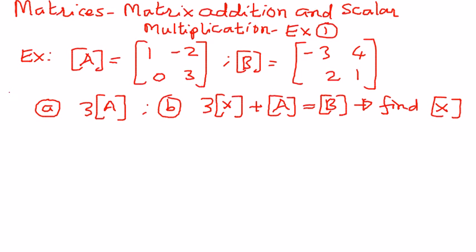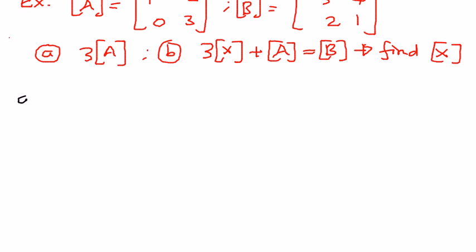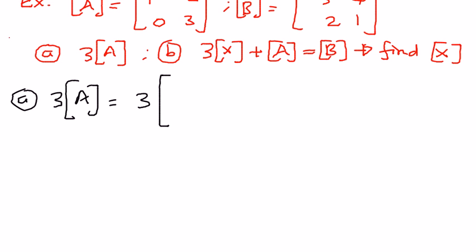So let's try this. The first example: we have 3 times matrix A. 3 is a scalar quantity, and matrix A is 1, negative 2, 0, 3. The scalar 3, which is outside the matrix, will be distributed to every one of the elements inside this matrix.